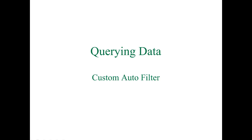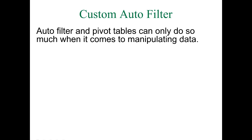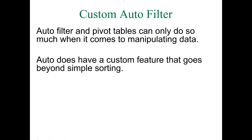In our last video we talked about the advantages of sorting and auto filter to find data in a database in Excel. Now we're going to climb the ladder of sophistication and look at something more advanced called custom auto filter. Auto filter and pivot tables can only do so much when manipulating data, but auto filter does have a custom feature that goes beyond simple sorting.